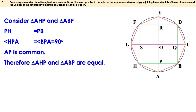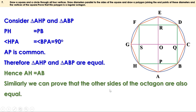Triangle AHP and triangle ABP are equal. When two triangles are equal, the sides opposite to equal angles are equal. These two angles are equal and the sides opposite to them are AH and AB, so AH equals AB. Similarly, we can prove that the other sides of the octagon are also equal. PB is half the side of the square and BQ is also half the side of the square, so they are equal. The diameters are perpendicular to BH and BD respectively, so these two angles are 90 degrees. AP equals OA minus OP, which is radius minus half the side of the square, and QC equals the same. Therefore AP and QC are equal, so these two triangles are also equal and AB equals BC. In this way, we can prove that all the sides of the octagon are equal.